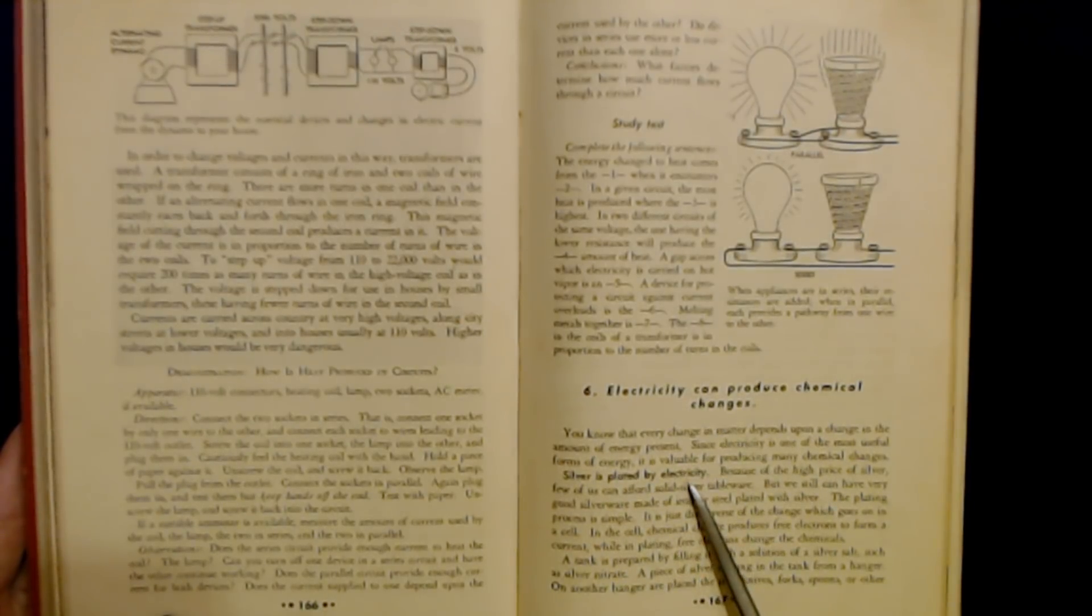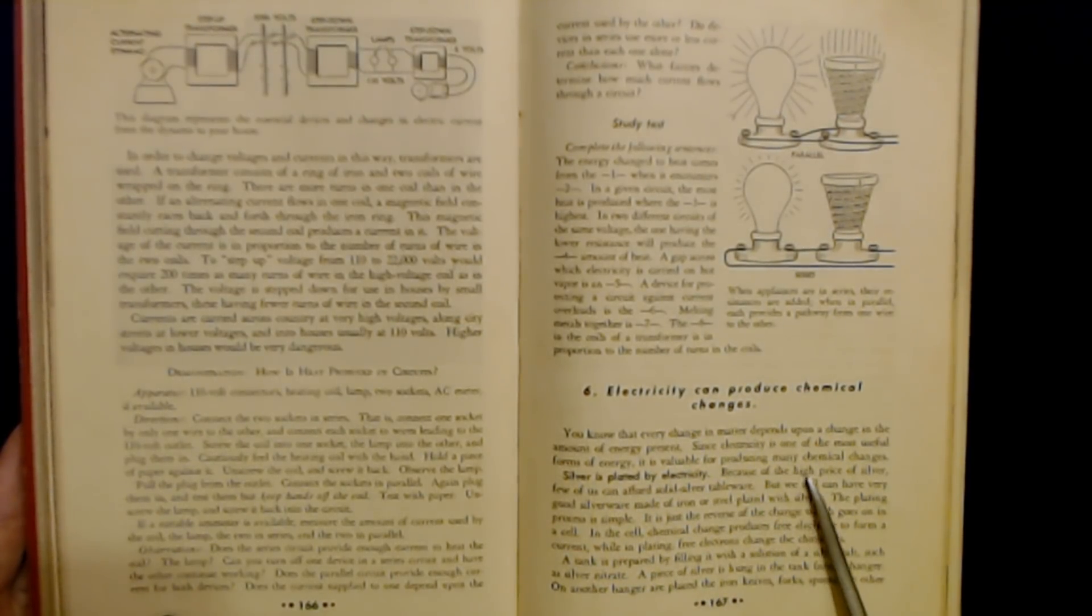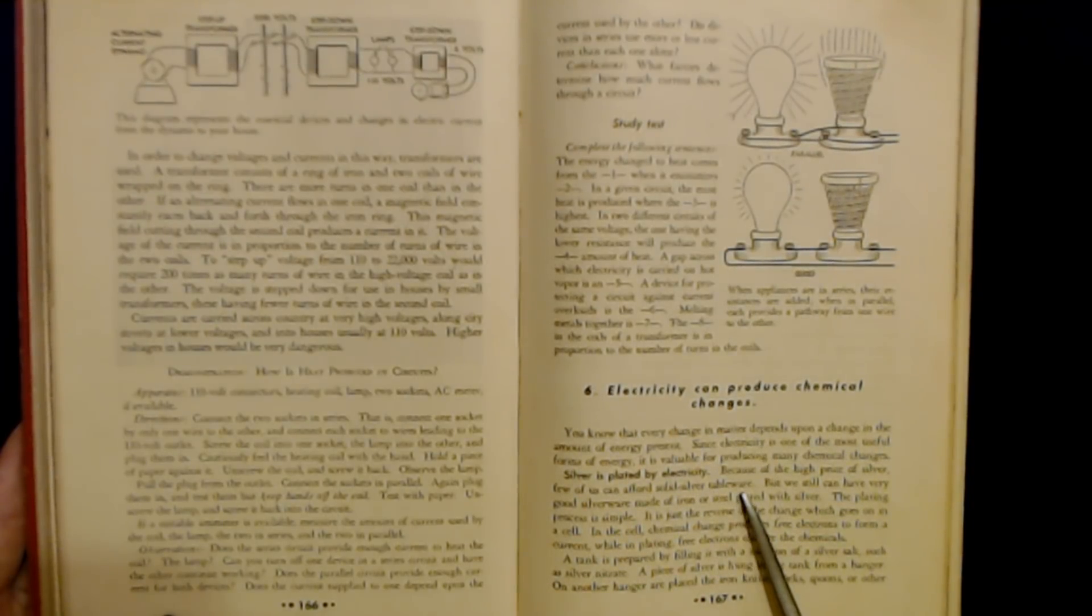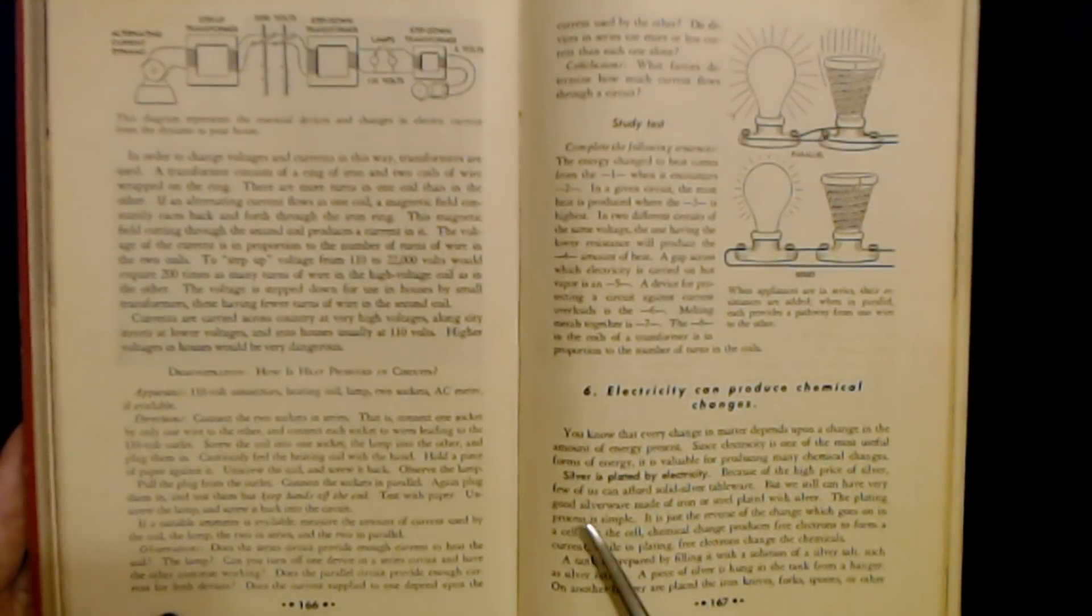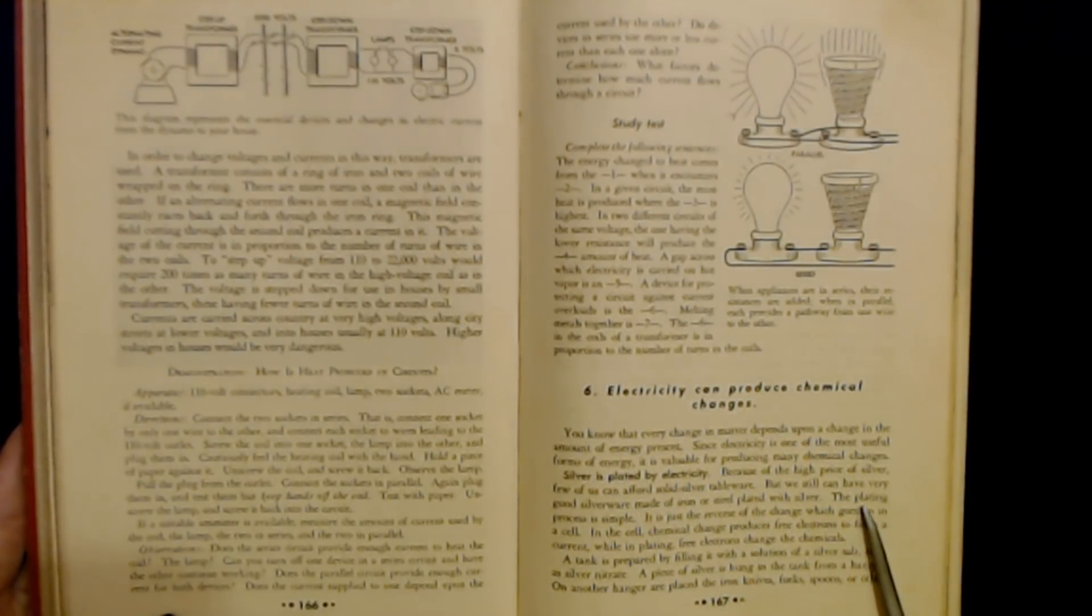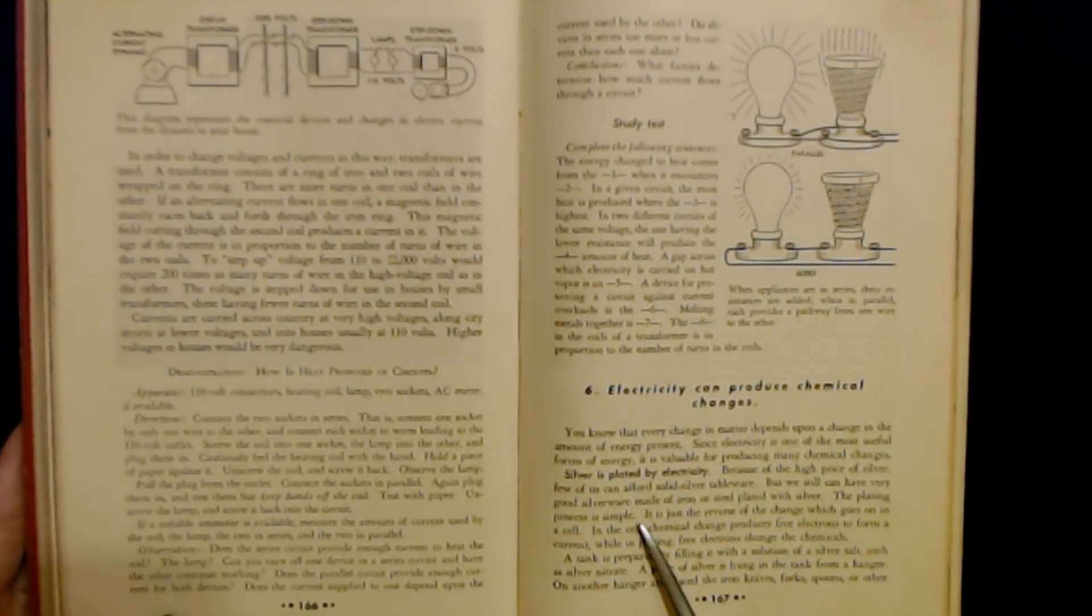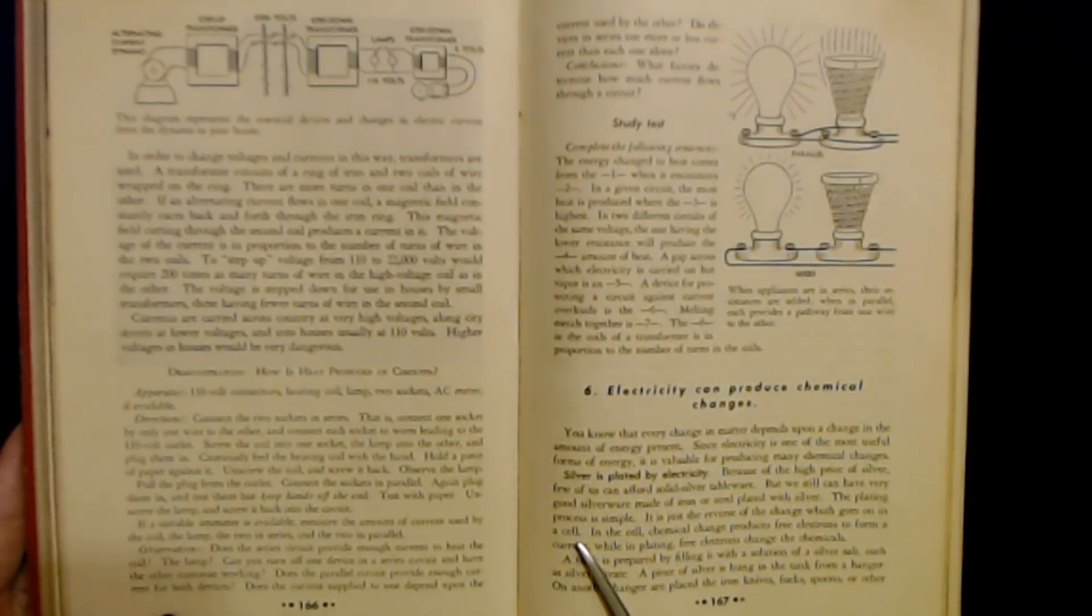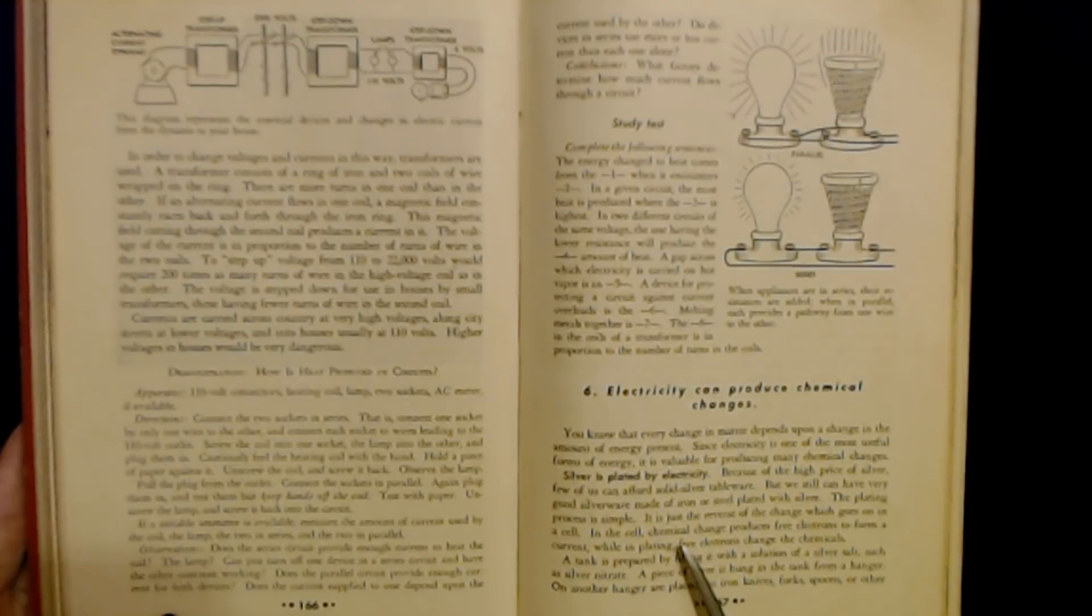Silver is plated by electricity. Because of the high price of silver, few of us can afford solid silver tableware. But we still can have very good silverware made of iron or steel plated with silver. The plating process is simple. It is just the reverse of the change which goes on in a cell. In the cell, chemical change produces free electrons to form a current while in plating, free electrons change the chemicals.